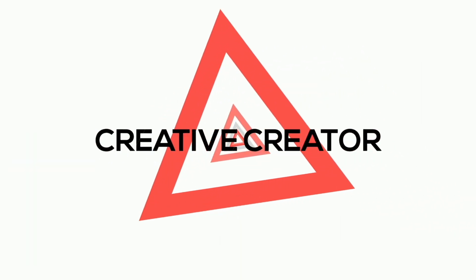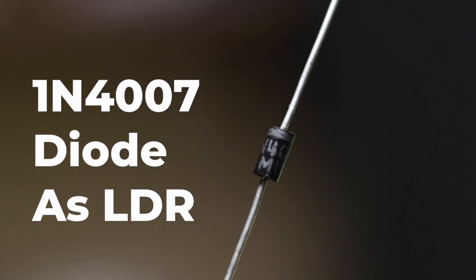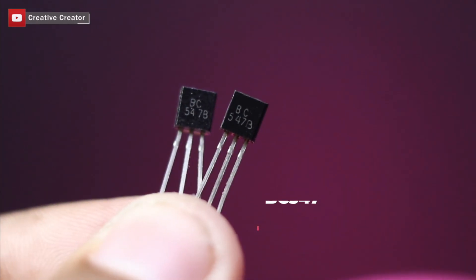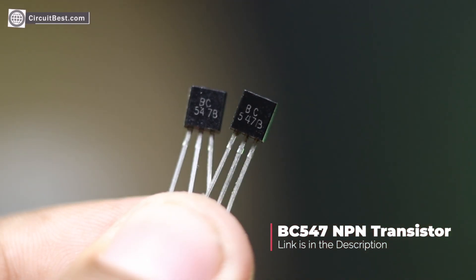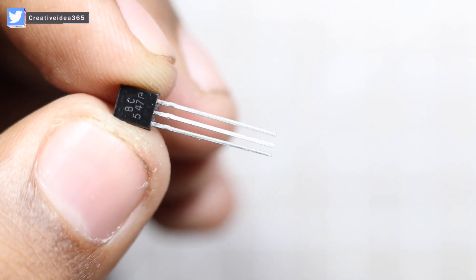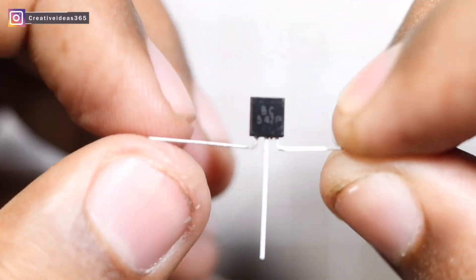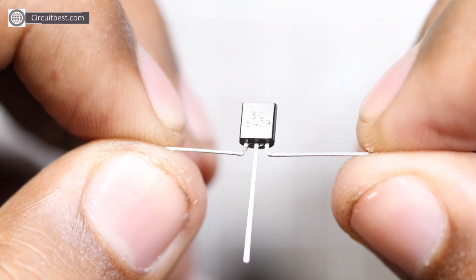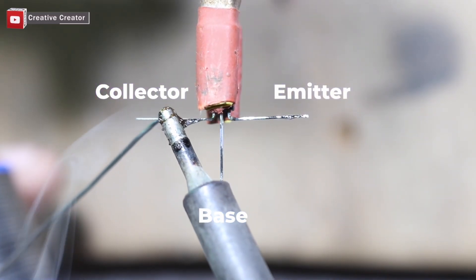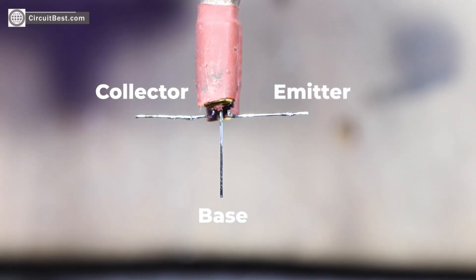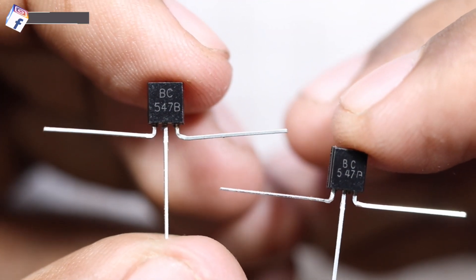In this video I will be making a simple darkness sensor circuit using 1N4007 diode. For those who are not familiar with BC547 transistor, here is the pinout for connecting. Actually we will need two transistors for signal amplification purposes.